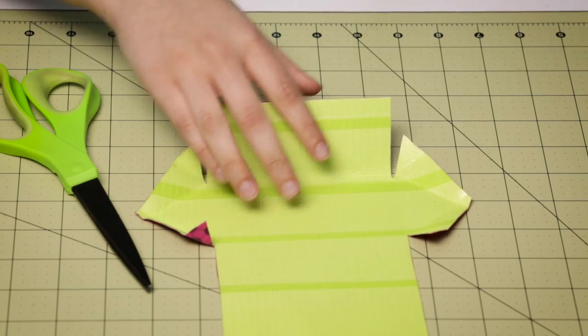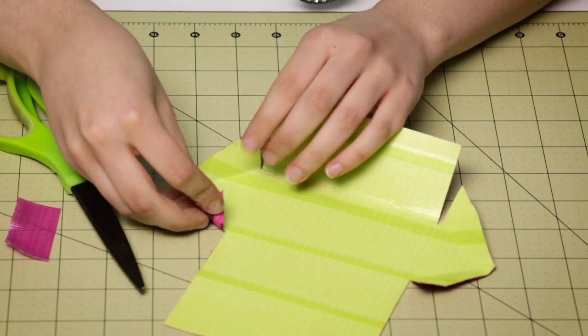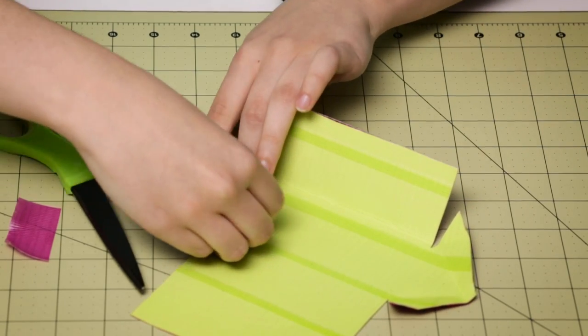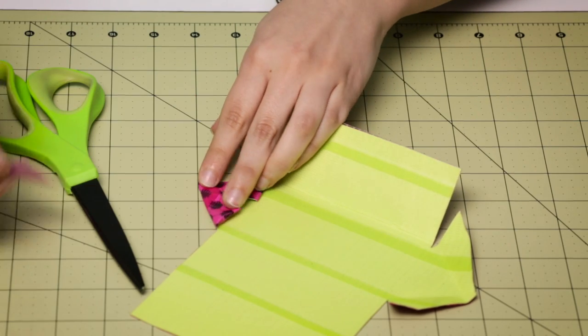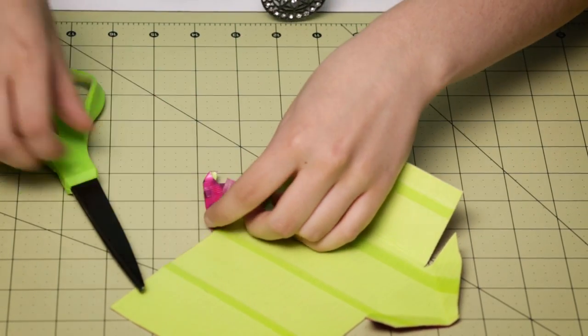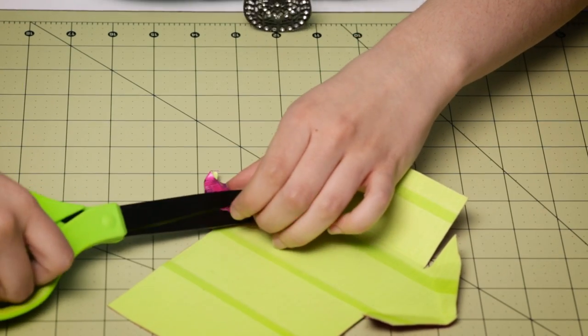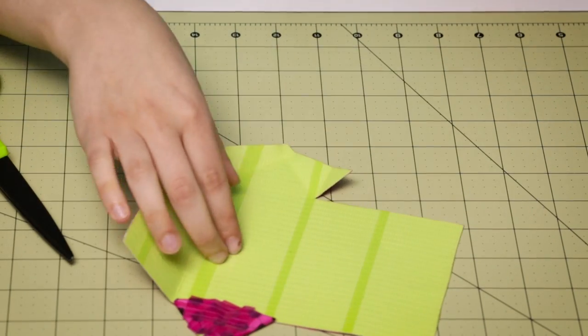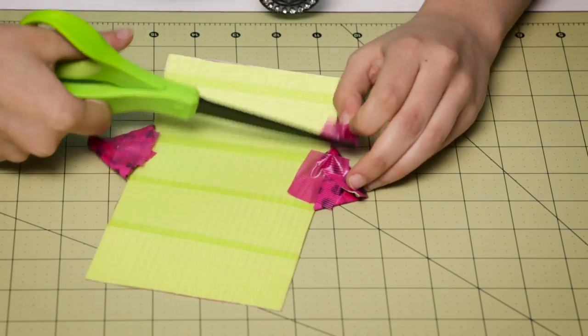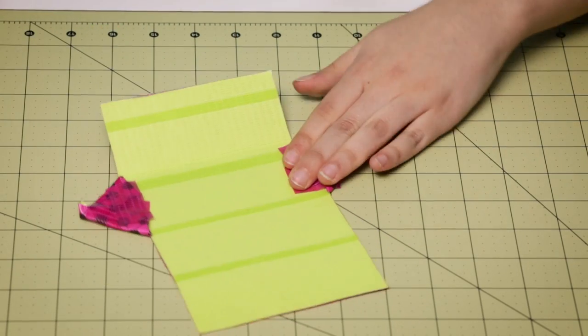So now you want to have some little strips of tape. And you want to fold these back in. And this doesn't really need to be any specific measurement. Just kind of eyeball it. And you can always cut off any extra that you have if it's too much. And do the exact same thing on this side.